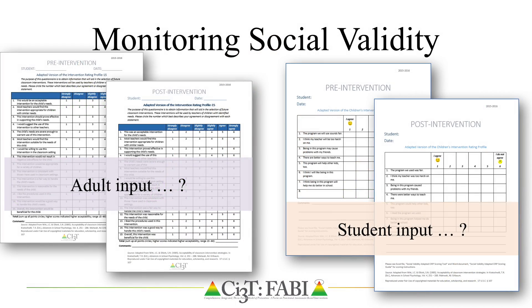In Step 4, a plan is also developed to monitor social validity prior to the start of the intervention and before training. This ensures the teacher, parents, and students have consensus on the goals, are comfortable with the procedures, and believe the intervention is likely to achieve the desired outcomes. The teacher and student are introduced to the intervention and complete social validity forms. If there are any serious concerns, such as the student feels the intervention would be embarrassing or the teacher does not feel it is feasible, procedures are revisited and modified accordingly.